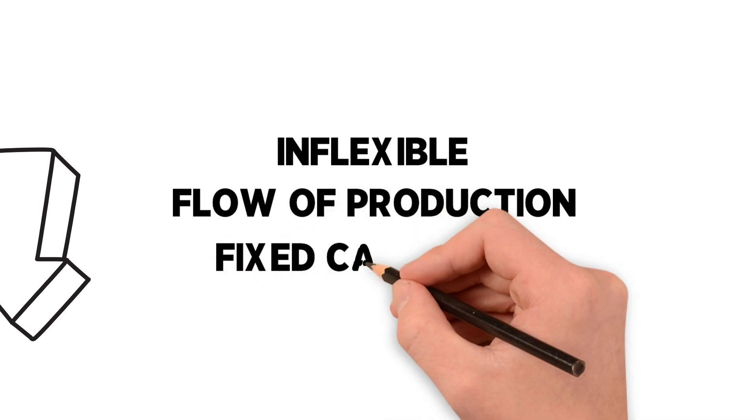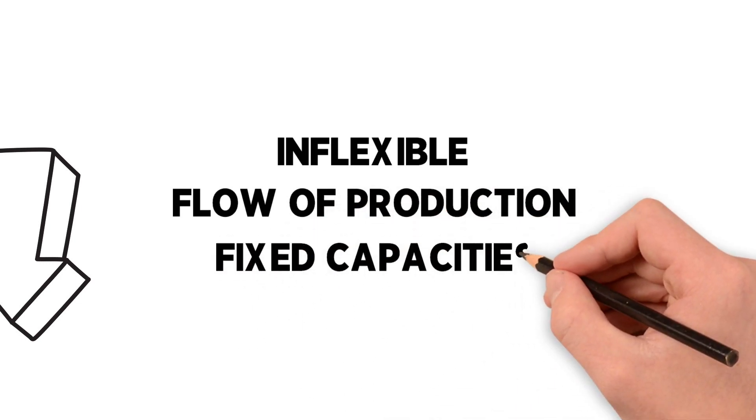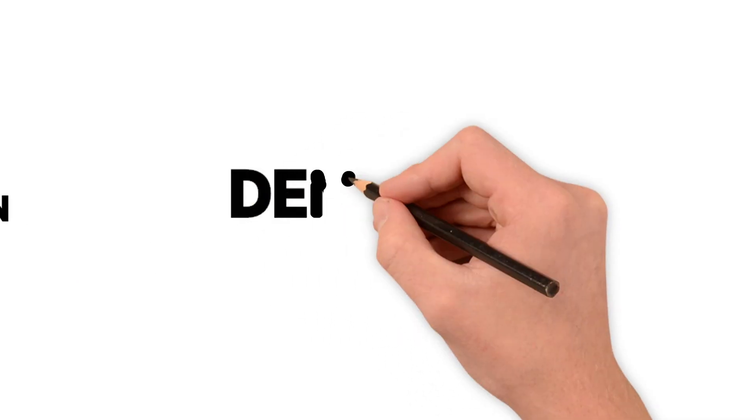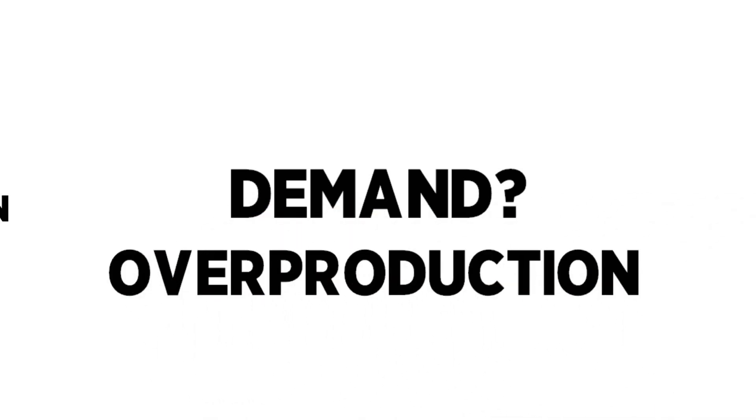Moreover, drum buffer rope only considers the optimization of one production step, although the demand is considered. So overproduction is possible, and the stocks that have been saved on one step could appear on another step.